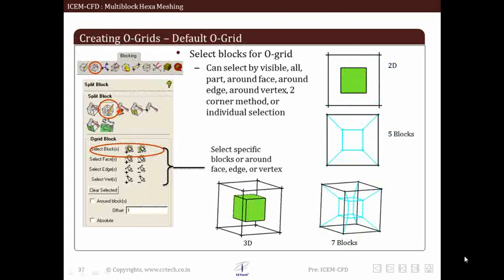There are different ways available to create an O-Grid. To create an O-Grid first we need to select a block or blocks. The block selection can either be done by parts or all visible or by selecting around faces, edges or vertex. We can also make individual selection of block. We also have provision of creating O-Grid around blocks by enabling around block offset option. Around block offset option if enabled specifies height of O-Grid layer. Offset behaves like a relative distance. A value of 1 causes hexa measure to place O-Grid at a location where resulting block will be distorted least. A higher value makes inner block of O-Grid smaller with surrounding blocks larger and a smaller value makes inner blocks larger and surrounding blocks smaller.